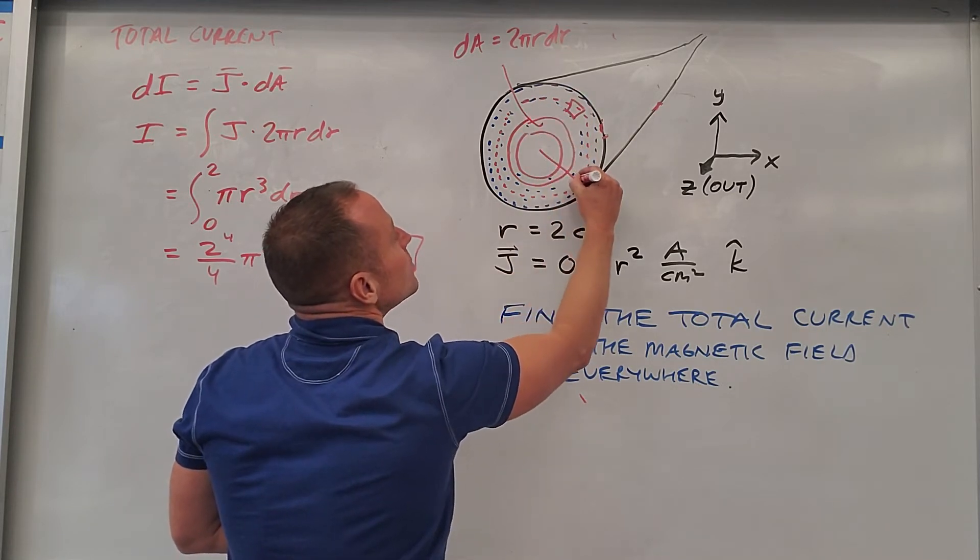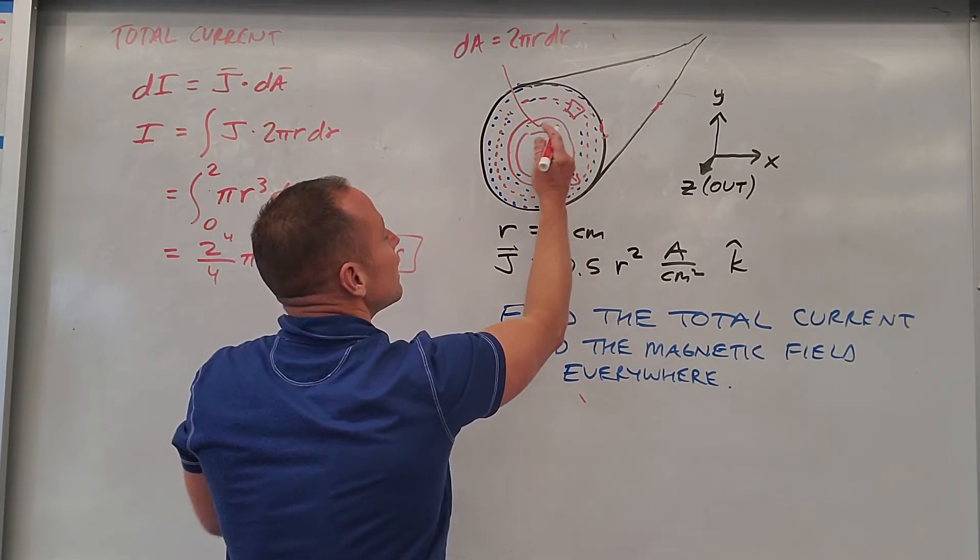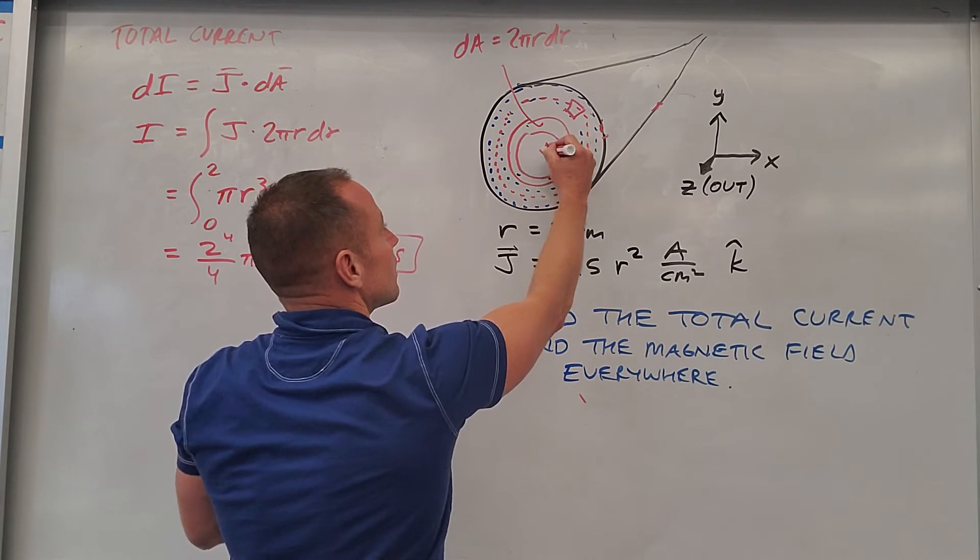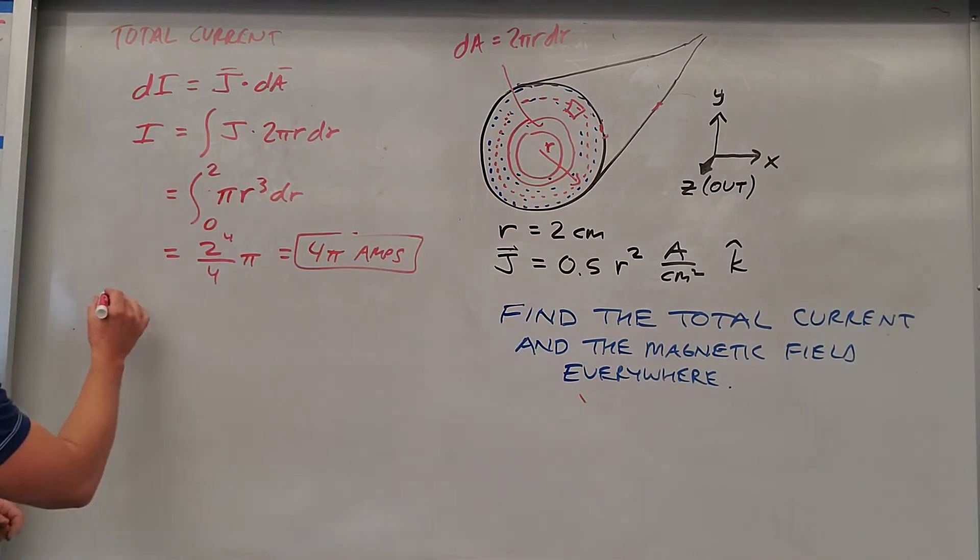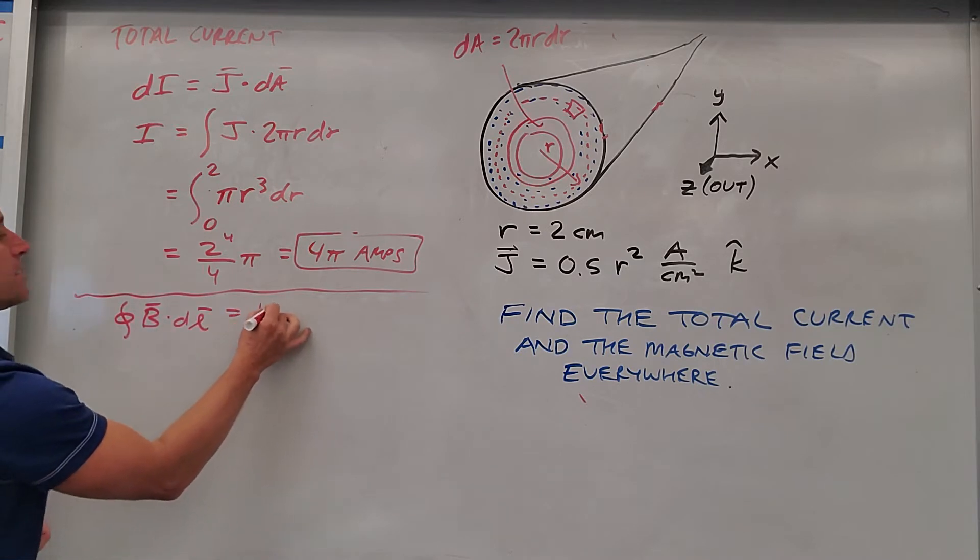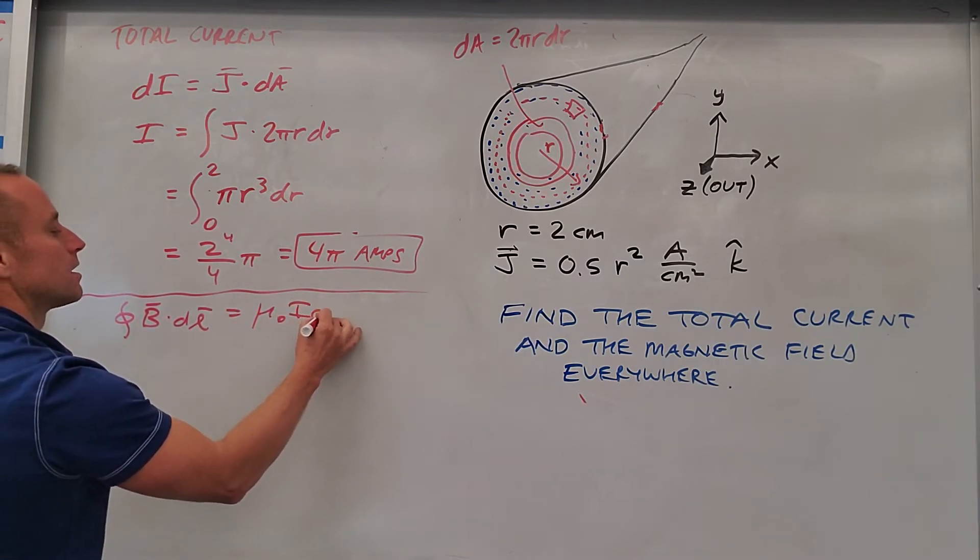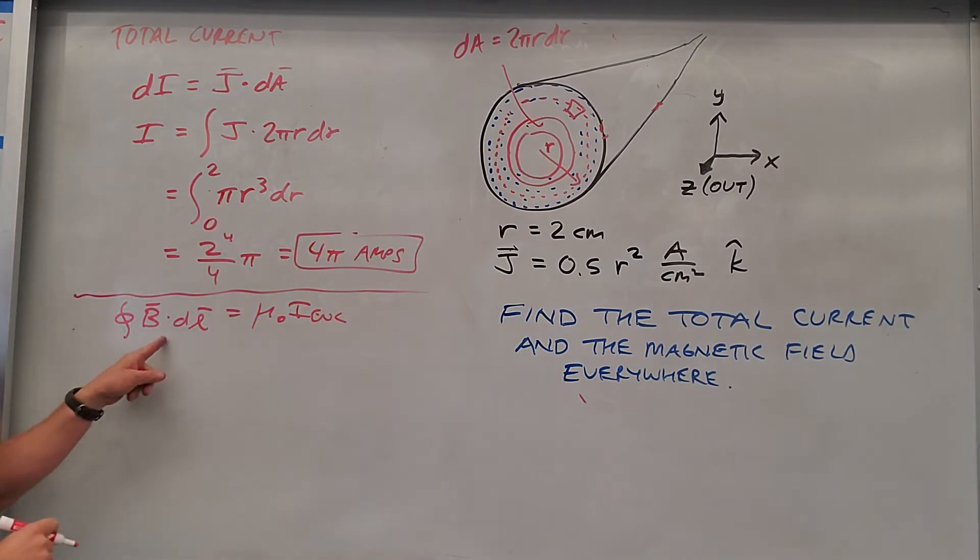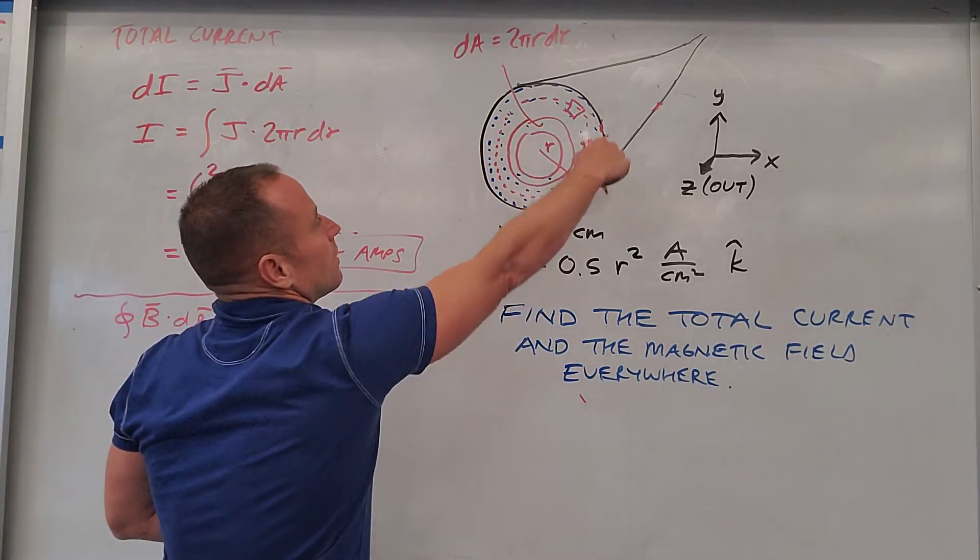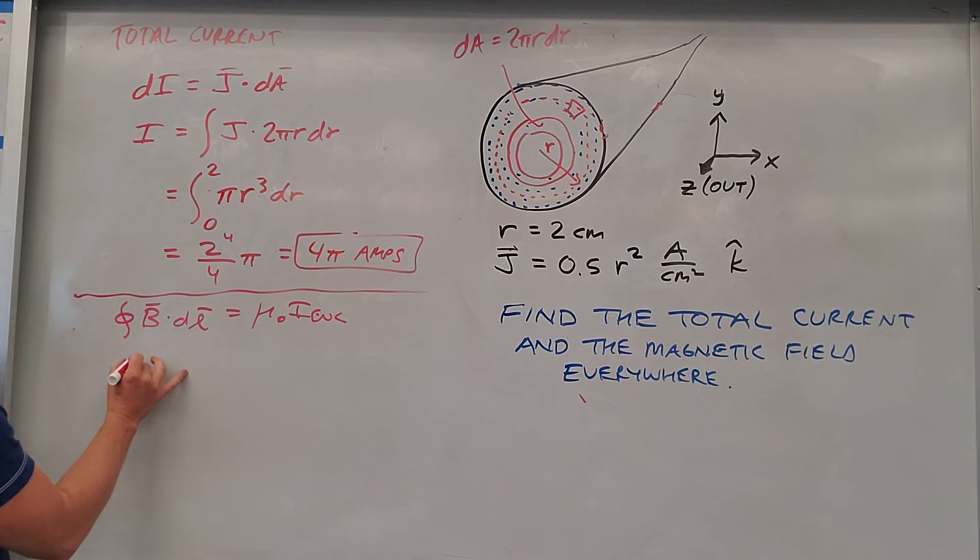So what we want to do is make our little Amperian loop inside. We'll give it an arbitrary radius so we can get the field at any radius that we want within the thing. And so then let's go for it. We'll write down Ampere's law. Integral B dot DL around a closed loop is mu naught I enclosed. This side's pretty easy because we've chosen an Amperian loop that always follows the field. So that'll be B times 2 pi R again.